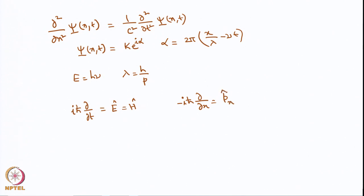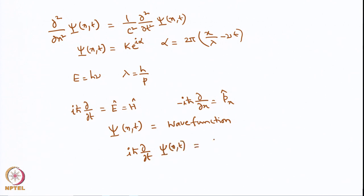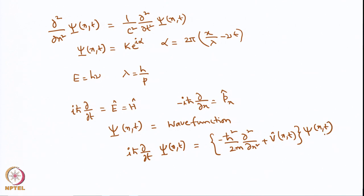We further developed that ψ(x,t) is called the wave function and is governed by the time-dependent Schrödinger equation, which says: iħ·∂/∂t ψ(x,t) = [−ħ²/2m · ∂²/∂x² + V(x,t)] ψ(x,t). The time dependence of the wave function will depend on the Hamiltonian in question, and this is called the Hamiltonian operator H.